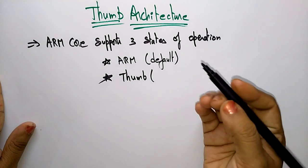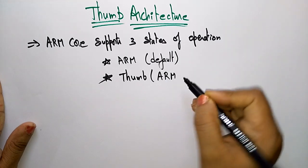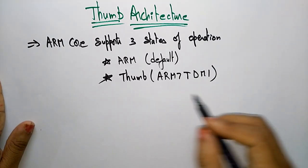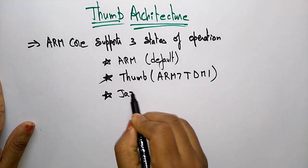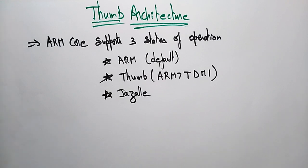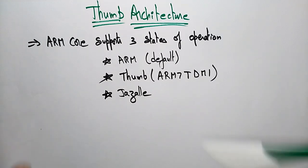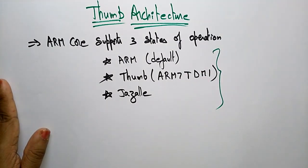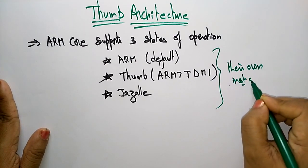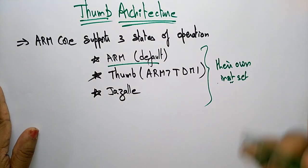If you want to choose the Thumb state of operation, you need to select the controller as ARM7T — 'T' is for Thumb — the DMI controller. The next is Jazelle. Each of these modes will have their own instruction set. Whatever state of operation you have taken, they have their own instruction sets. We already seen the instruction set of the ARM, and the Thumb is having their own instruction set, and Jazelle is having their own instruction set.